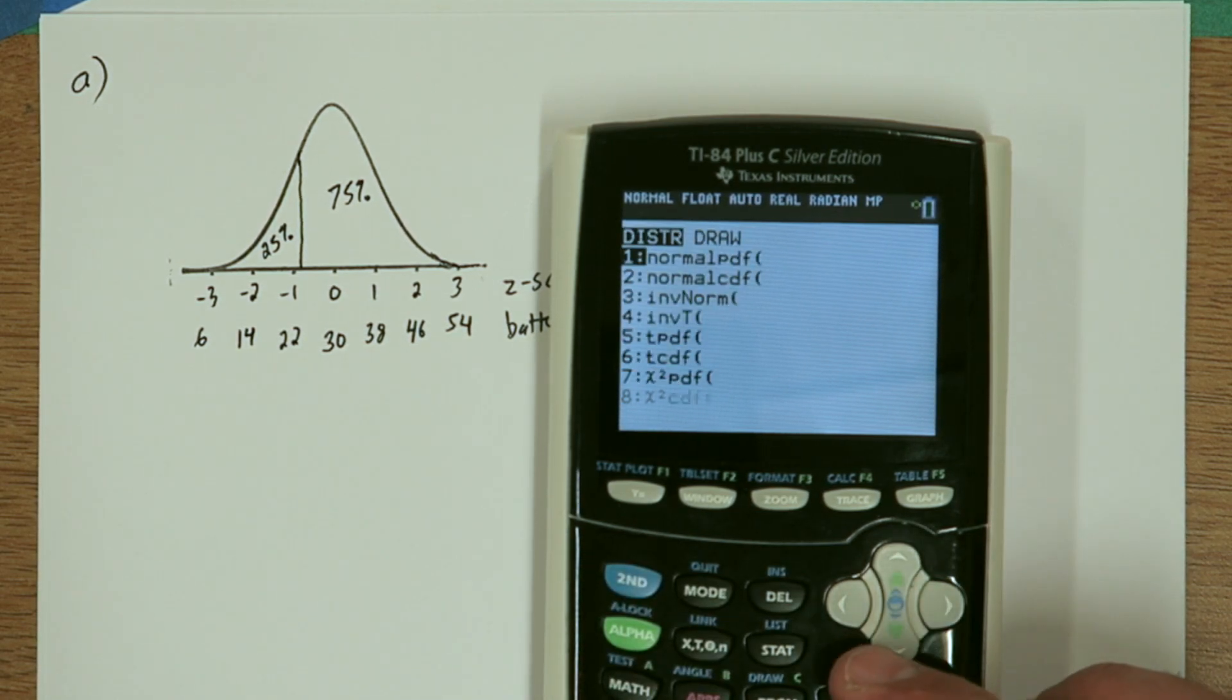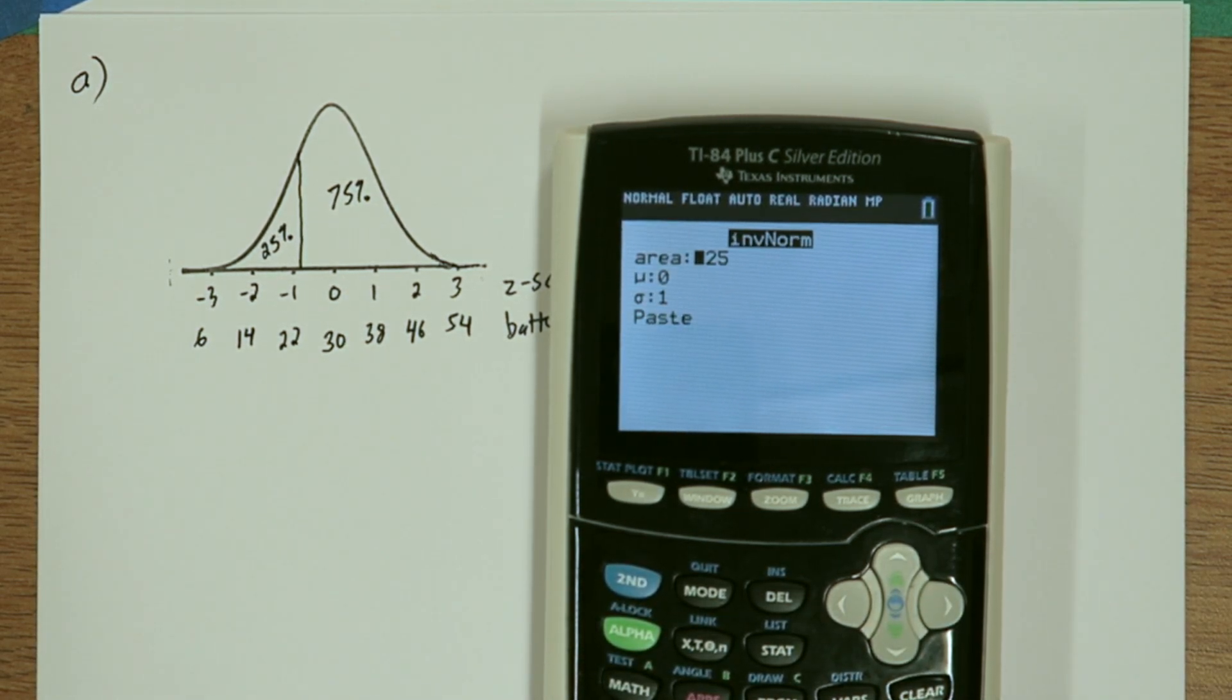If you go back to 2nd VARS and where it says inverse norm, leave the 0.25 as the area, but change the mean to the mean from the problem and the standard deviation to the standard deviation from the problem. There we go.